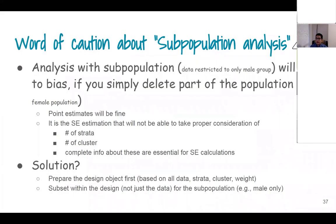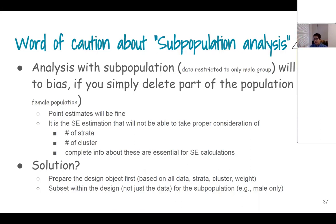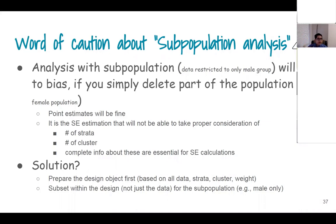An important point: survey weights are already calculated based on the entire sample. If you say you are only interested in pregnant women and you truncate or chop off the male population from your analytic sample, that will distort the weights. To calculate the Taylor series approximation you need the number of strata and clusters, and when you chop off half of your population, those counts change and the resulting standard error will be different from what you intended.